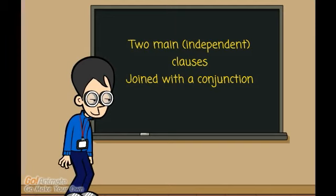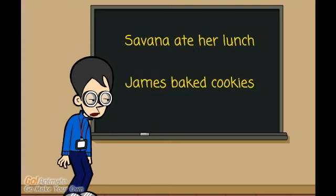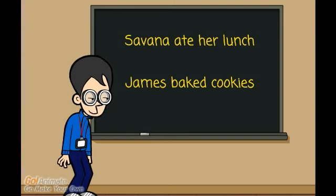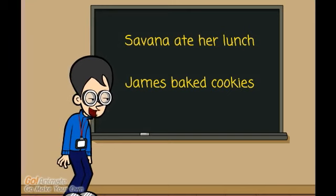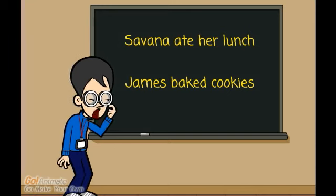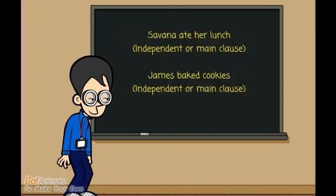Let's explore that together. Here are two clauses. Savannah ate her lunch — Savannah is the subject and ate is the verb. James baked cookies — James is the subject and baked is the verb. Both of these clauses make sense by themselves. If we added capital letters and full stops, we could have two sentences. A clause that makes sense without having to add any other words or phrases is called an independent clause, or a main clause.